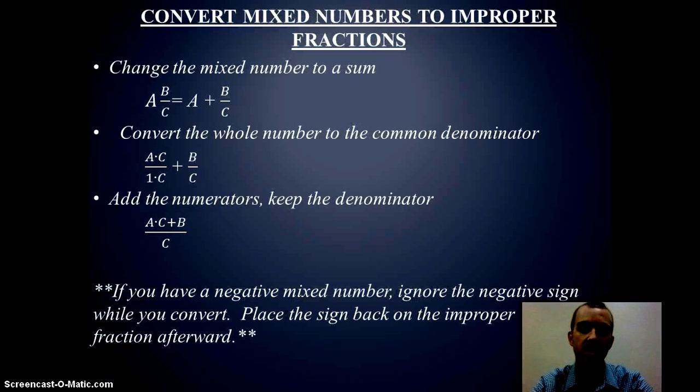Now if I want to convert mixed numbers to improper fractions, that's often something we see, especially as we're teaching in elementary school. First thing we do is we break the whole number from the fraction, because saying like three and two-thirds is the same as saying three plus two-thirds. And so we can split them.